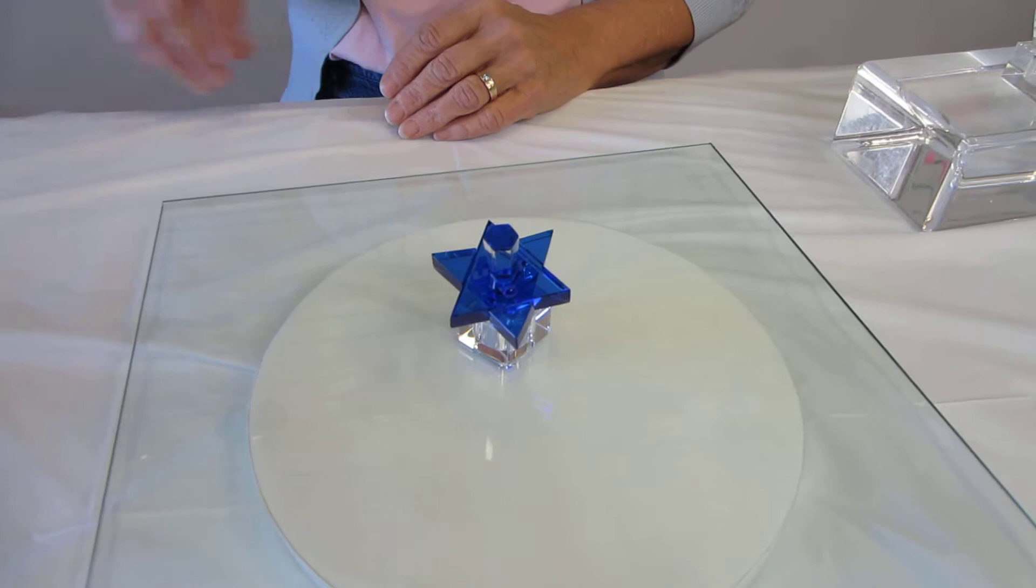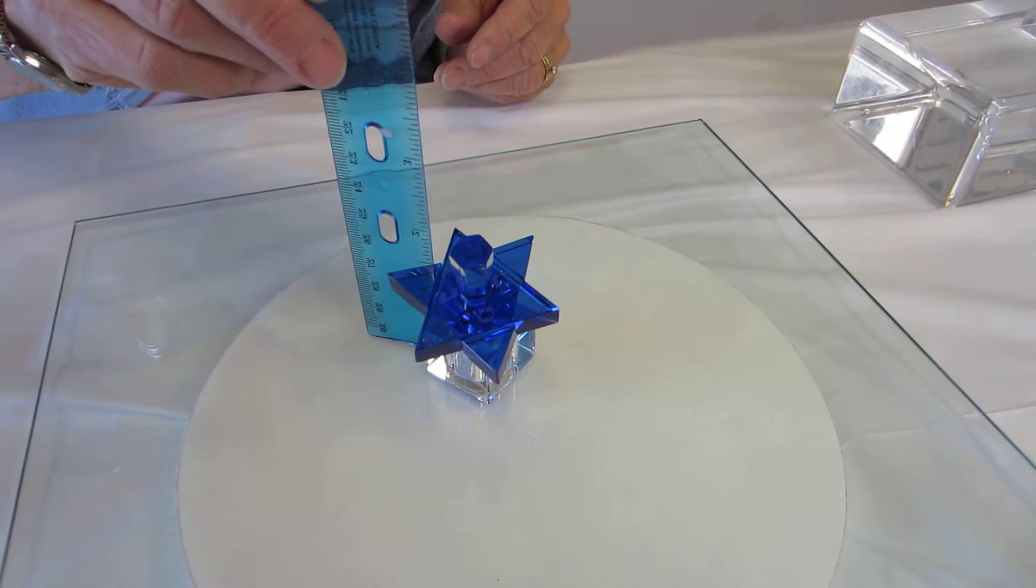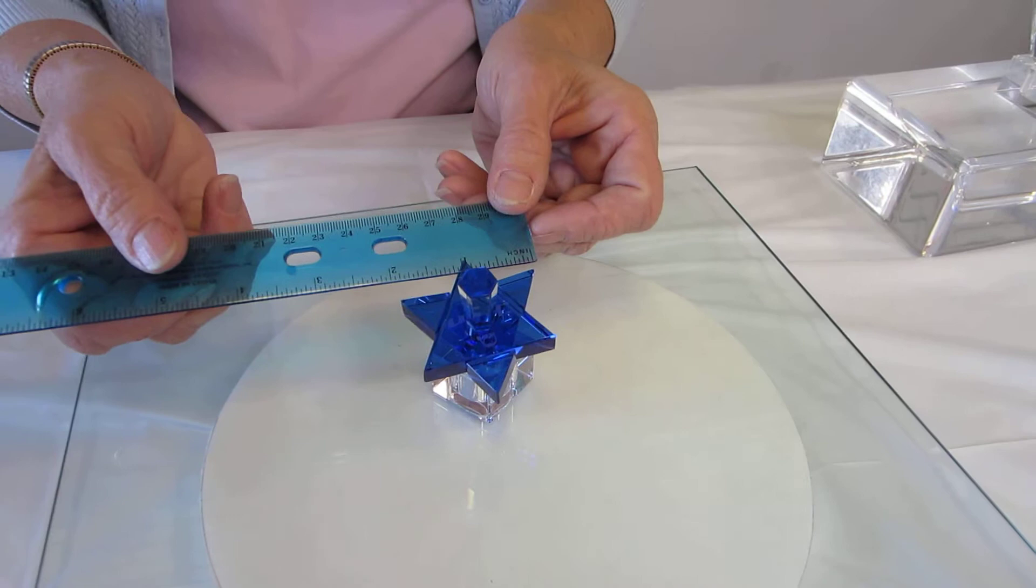This crystal dreidel comes with its own stand. On the stand it is approximately two and three-fourths inches high and the Star of David is two inches wide.